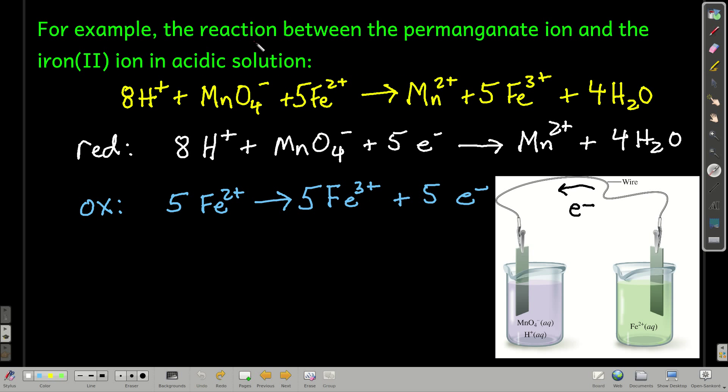So let's look at, for example, this redox reaction right here. And in this, this is a balanced redox reaction in acidic solution, the permanganate ion and iron(II).